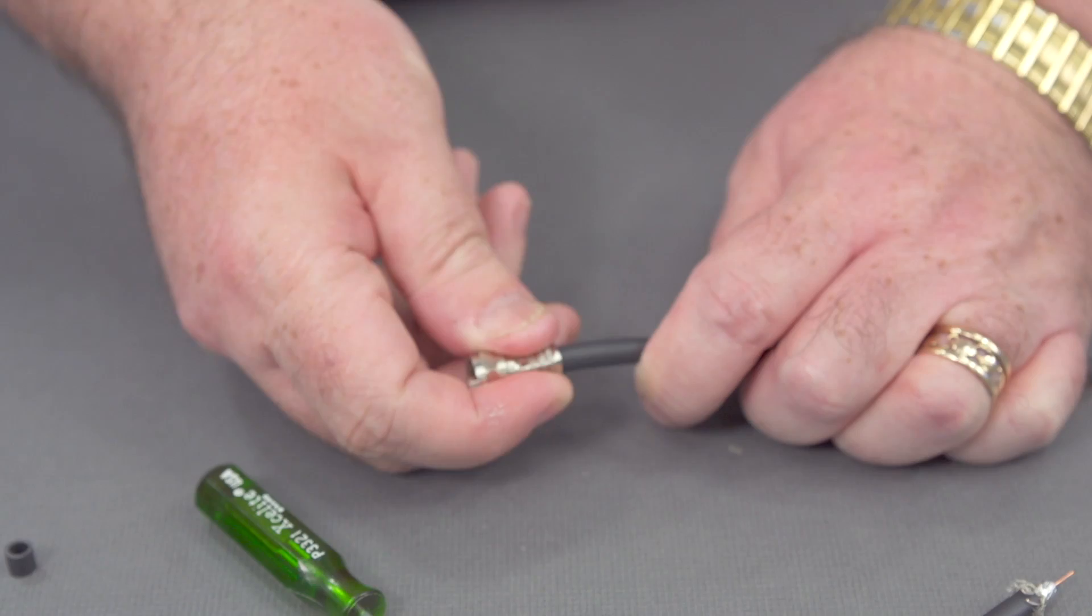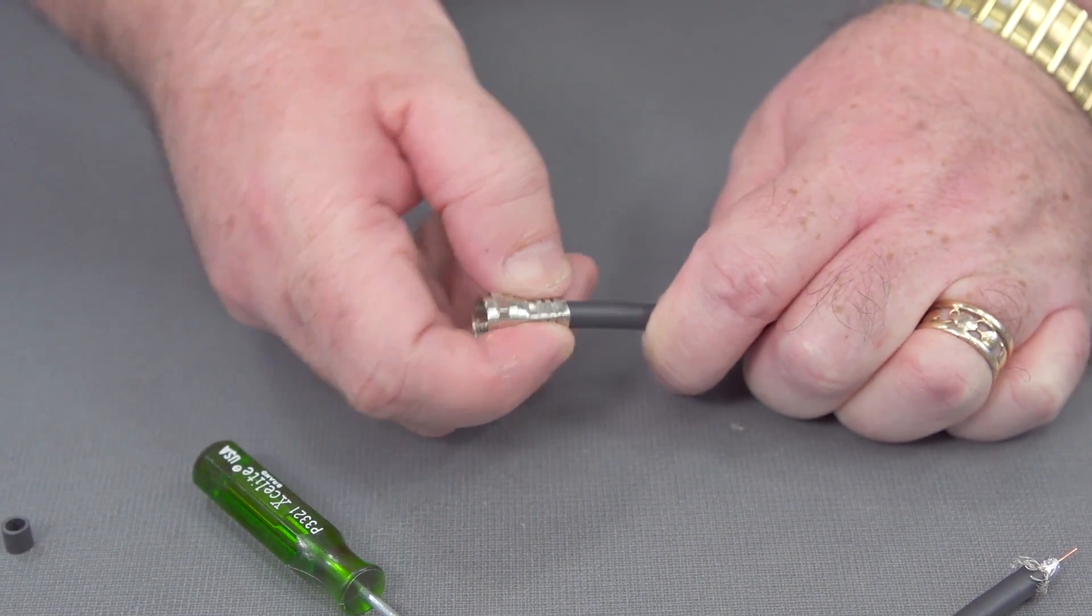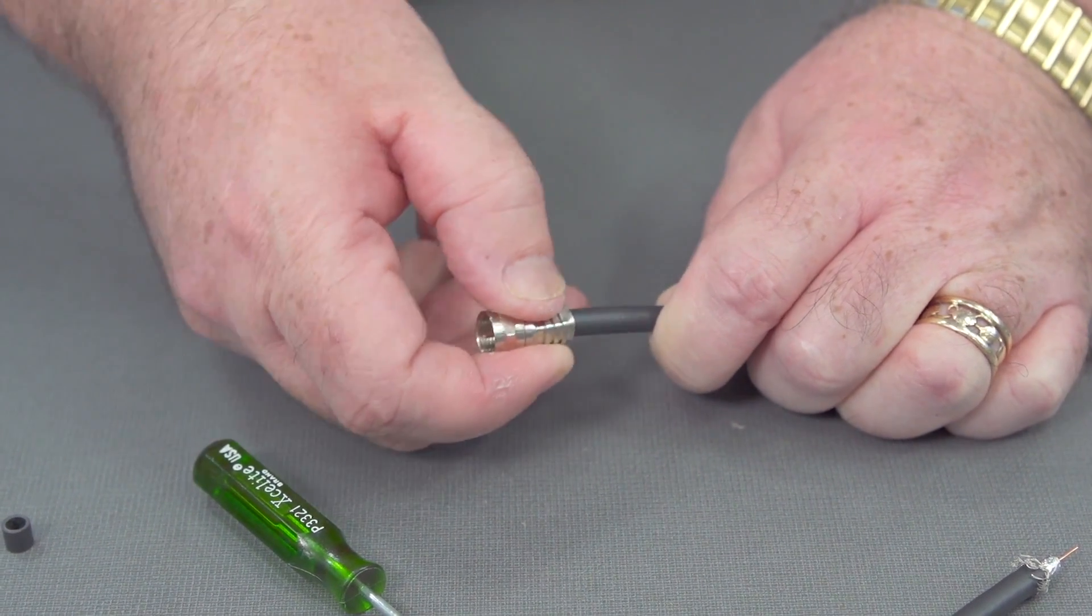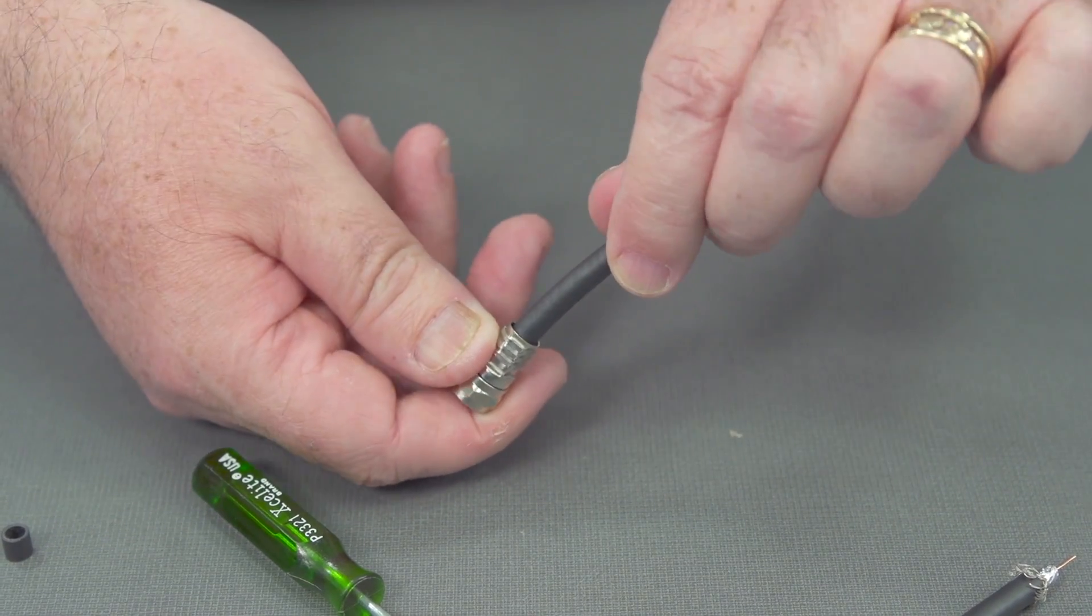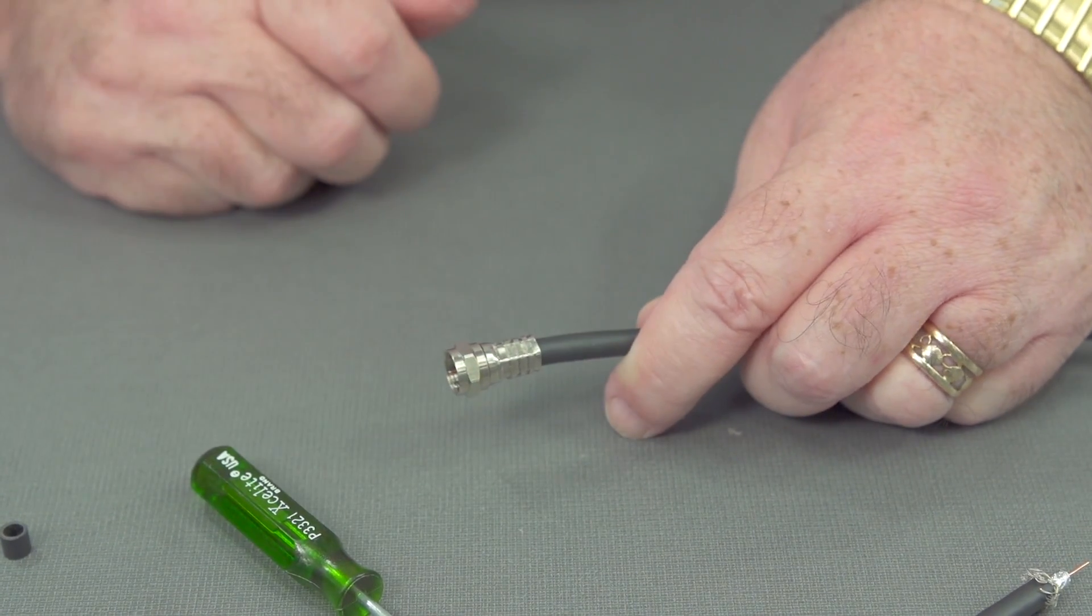Get a firm tug after you've crimped it. Make sure it's on there nice and snug. Make sure that nothing's changed. And there's an F connector.